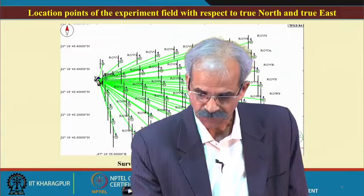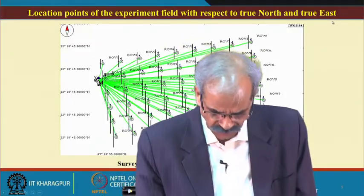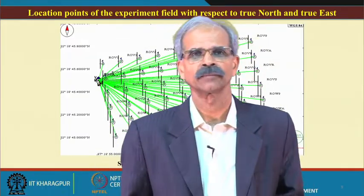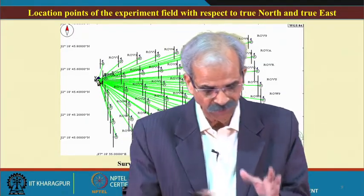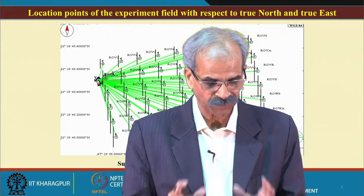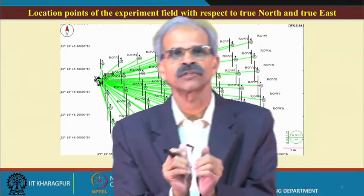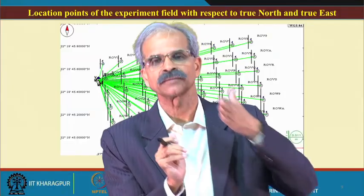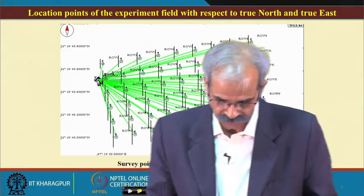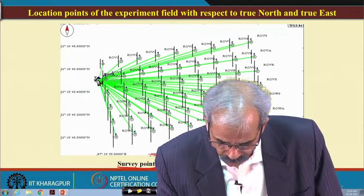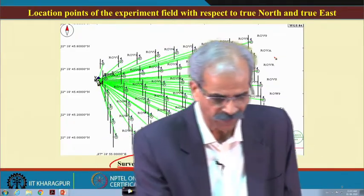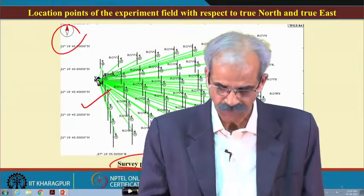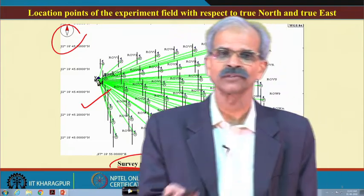The location points of the experimental field are referenced with respect to true north and true east — these are the survey points of latitude and longitude. This is the data we collected at IIT Kharagpur: as the rover goes to different locations, we record the latitude and longitude of each place. This information must be fed to the computer so that the software can read it when the tractor moves to a particular location.